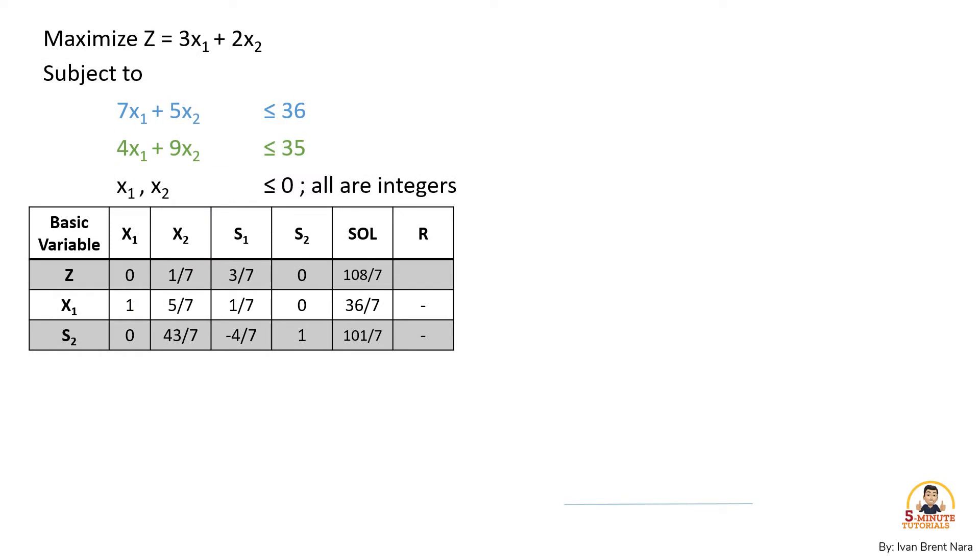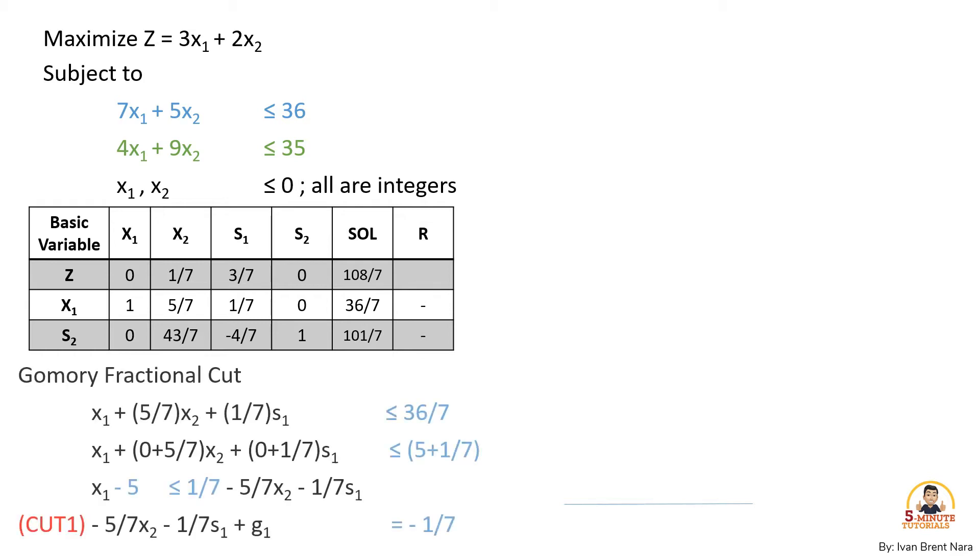After having the final tableau, the third constraint says that all decision variables must be integer, so we need to add special constraints or cuts to the solution space in a manner that it can render an integer optimum point. Let's have a fractional cut with row 3 or x sub 1 in hope to get the integer optimal solution.